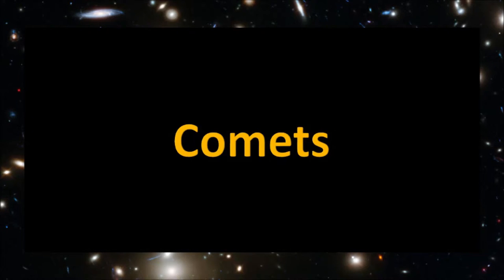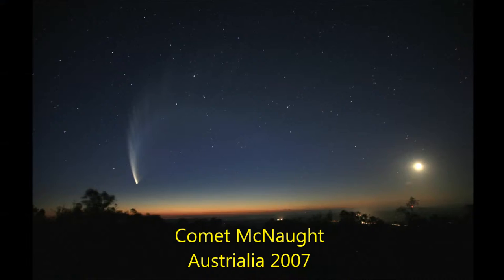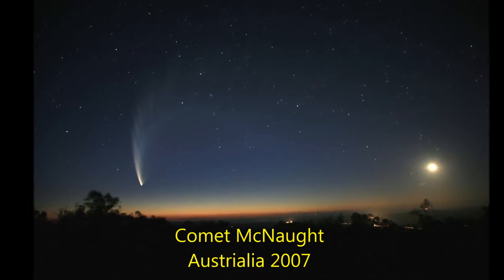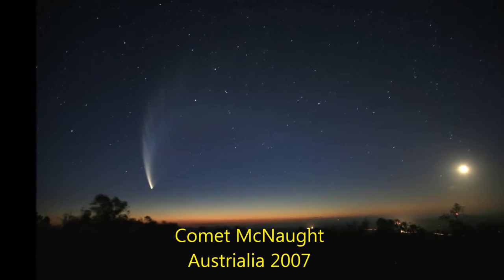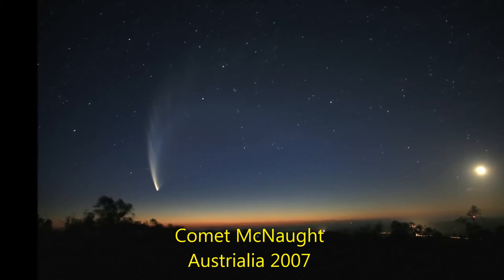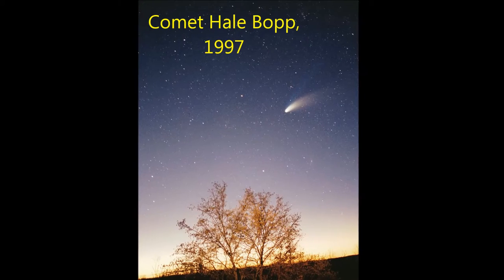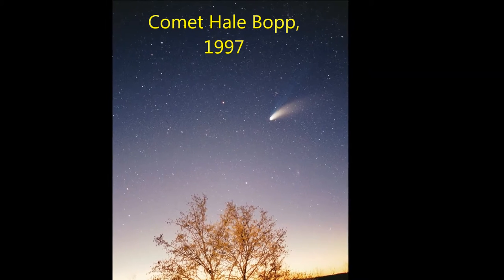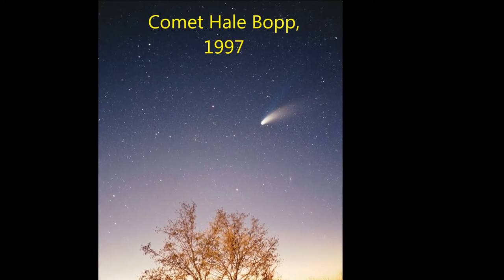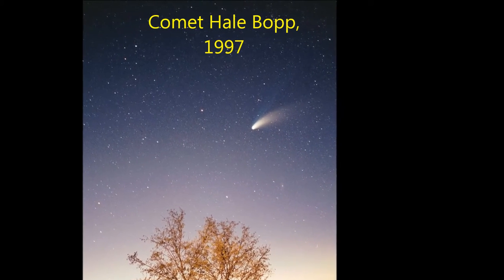Finally, let's learn about comets. A comet is a smaller celestial body mainly composed of ice and dust. When a comet approaches the sun, it can generate a tail made of gas or dust.